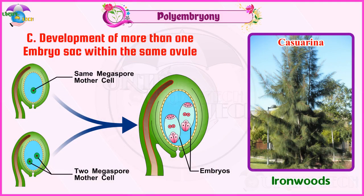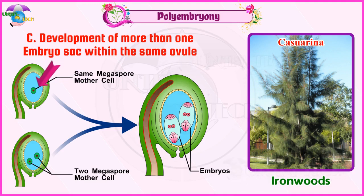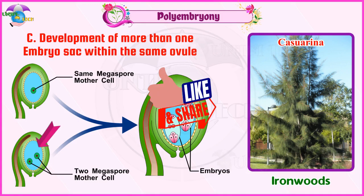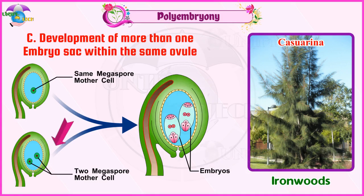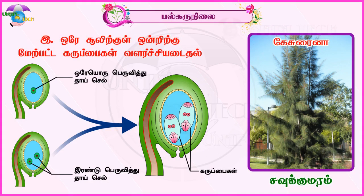Category C: Development of more than one embryo sac within the same ovule. This can arise from derivatives of the same megaspore mother cell, or from derivatives of two or more megaspore mother cells. Example: Casuarina.